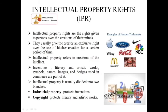Logos of different companies are part of intellectual properties, coming under trademarks. Intellectual property is classified into two types: industrial property and copyright. Industrial property protects inventions, while copyright protects literary and artistic works. Copyright is given to books written by certain authors, trademarks to logos of companies, and patents are granted for inventions for a particular period of time.